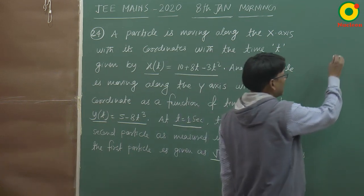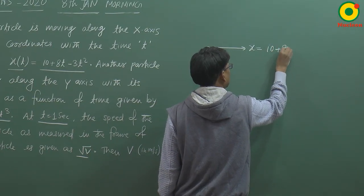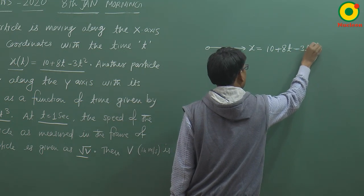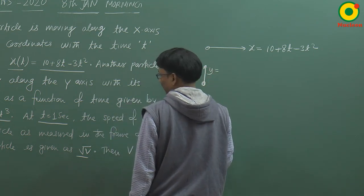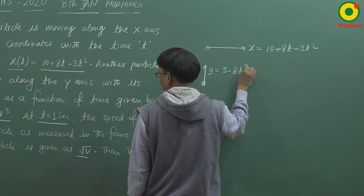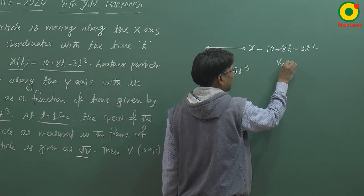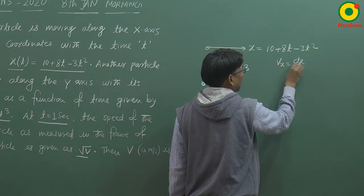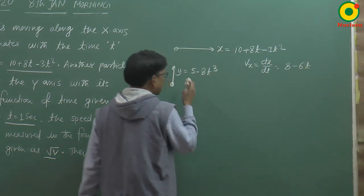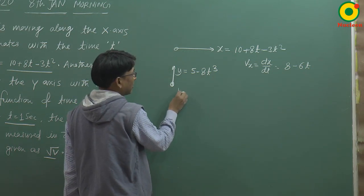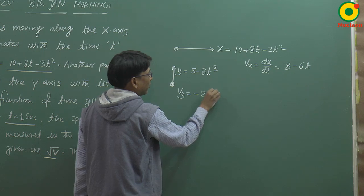एक particle x-direction में जा रहा है, इसका position दिया गया है 10 + 8t - 3t². दूसरा particle y-direction में जा रहा है, इसका position दिया गया है 5 - 8t³. पहले इनकी velocity निकालते हैं। x-direction की velocity के लिए differentiate करेंगे time के respect में, तो आएगा 8 - 6t। उसी तरह y-direction में velocity आएगी: 5 का 0, minus 8×3 = -24t².